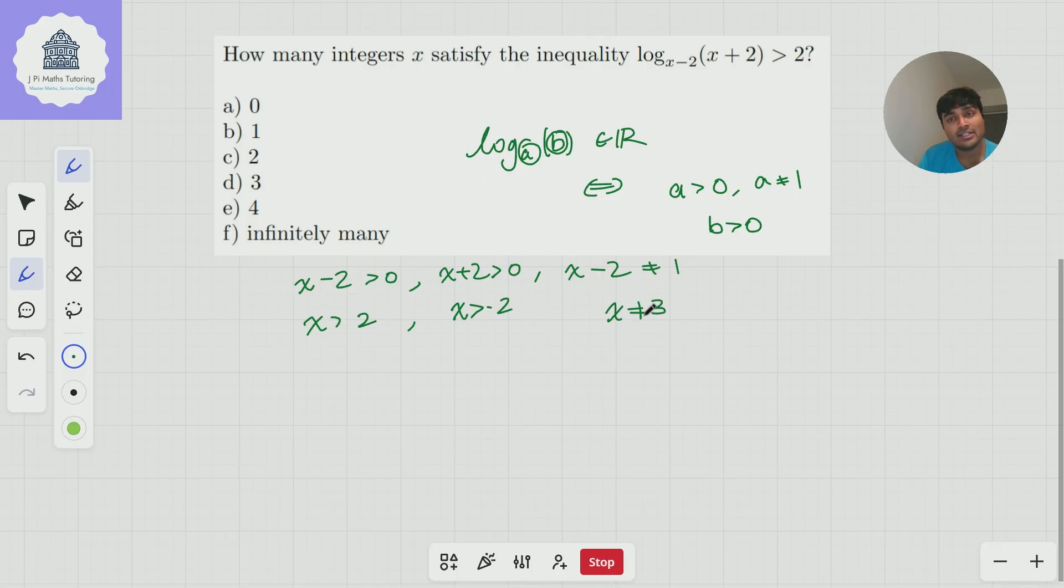So we need all three of these conditions to uphold in order for this left-hand side to even make sense, let alone be bigger than 2. And so we need x to be bigger than 2 and not equal to 3. And since we're dealing with integers x, that means x must be at least 4.